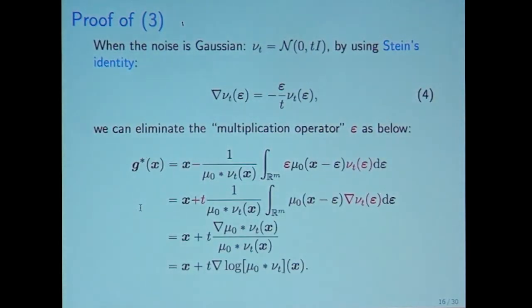In the special case, when the noise is Gaussian, with mean zero and covariance matrix given by Ti, we can use Stein's identity. This is a characteristic formula of Gaussian. We can use this formula only for Gaussian. Then we can eliminate the multiplication operator epsilon in the G star as below.